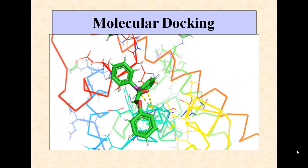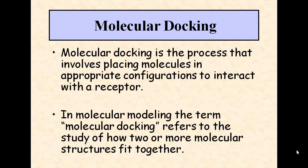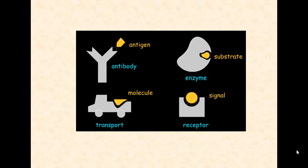Today we are going to talk about molecular docking. Molecular docking is the process that involves placing molecules in appropriate configurations to interact with a receptor. In molecular modeling, the term molecular docking refers to the study of how two or more molecular structures fit together. For example, an antigen can bind to an antibody, a substrate can bind to an enzyme, and different molecules can bind to their carrier molecules.